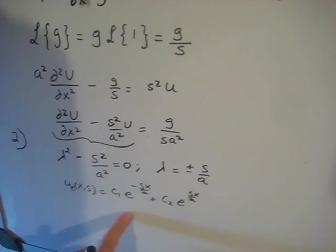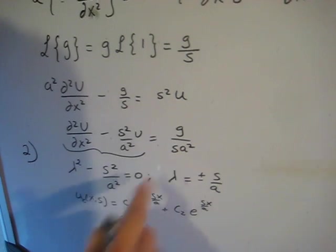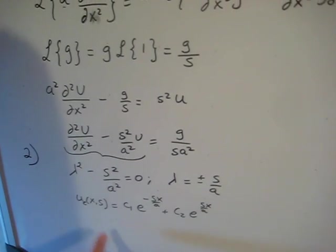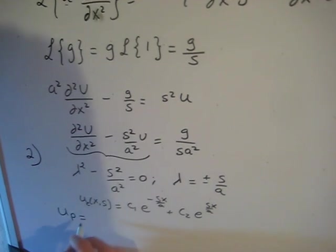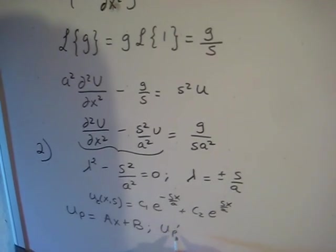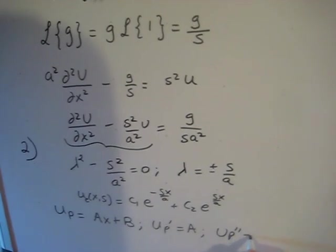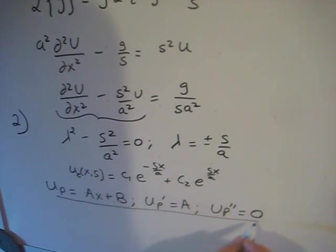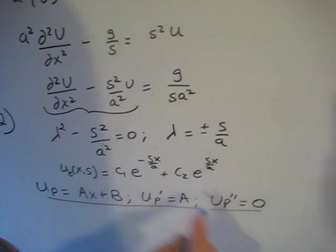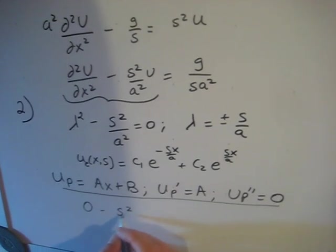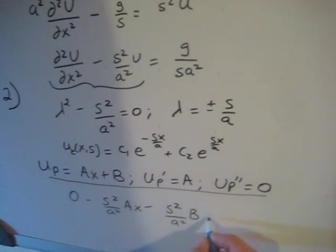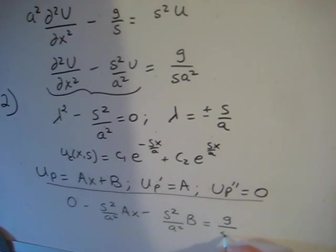Now we need to find a particular solution using the method of undetermined coefficients. We assume U_p = ax + b. The first derivative of U_p is a, and the second derivative is zero. We substitute these back into the equation, giving us: 0 minus (s²/a²)·(ax) minus (s²/a²)·b equals g/(s·a²).